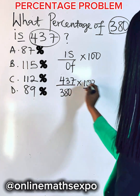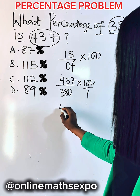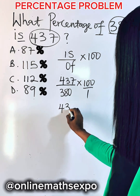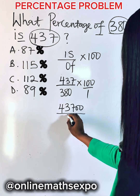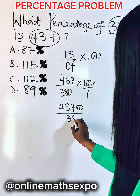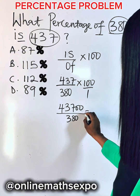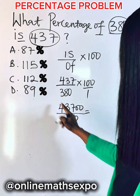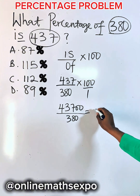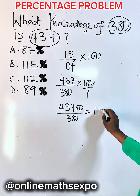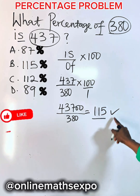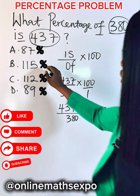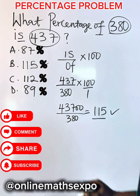You are done. So if you multiply this, it gives you 43700 divided by 380. And when you do that, you are going to have 115 as an answer, which is option B.